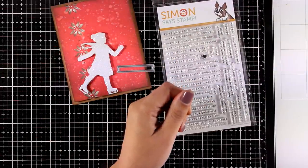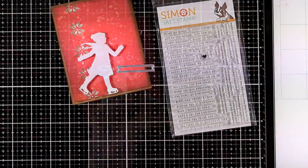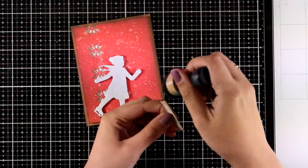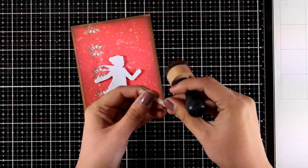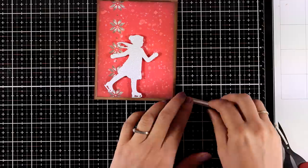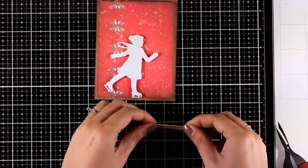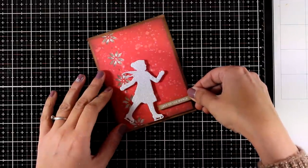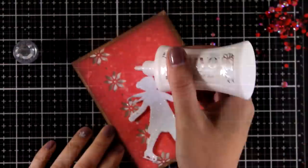I'll stamp on top with Versamark ink and white emboss my sentiment. I actually went with the sentiment that says Joy to the World. To match everything together I'm using my Vintage Photo to go around the edges. I'm going to add the foam tape at the back and just stick it down there.